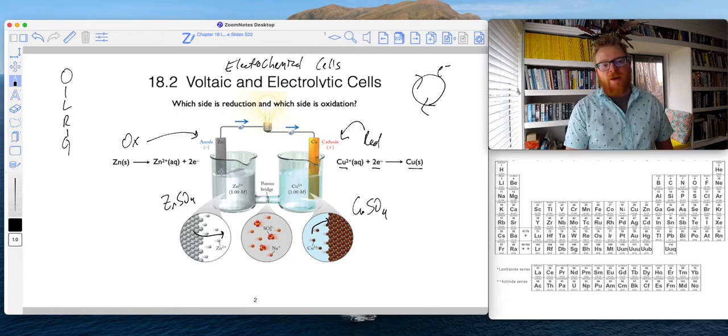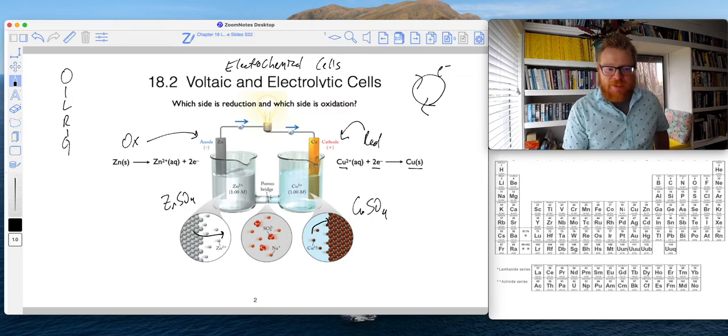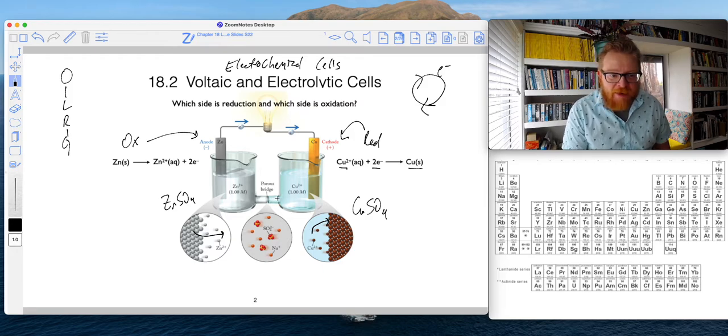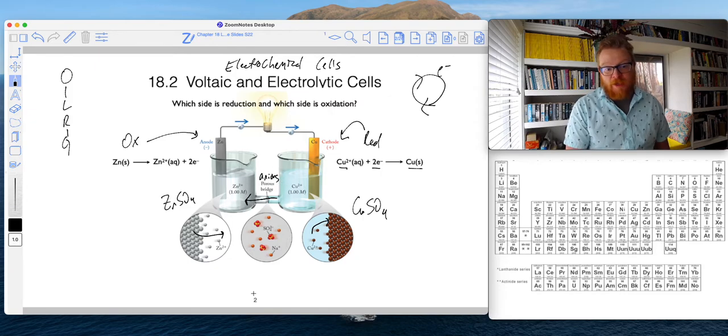For example, when electrons leave the anode, it leaves this side actually more positive because electrons are leaving. However, to counteract that, anions from the cathode will migrate to the anode. Anions are flowing this way.